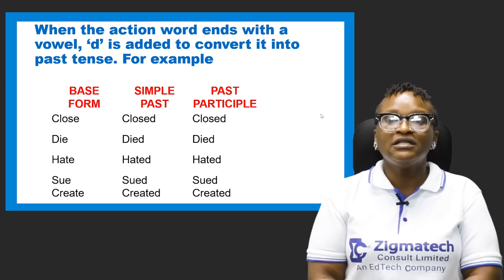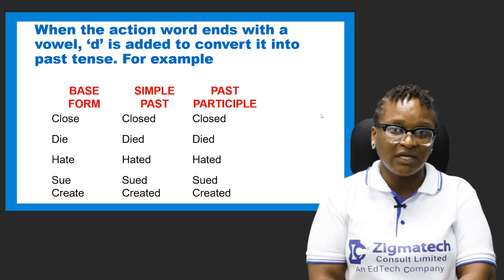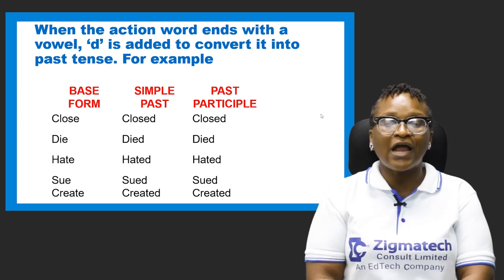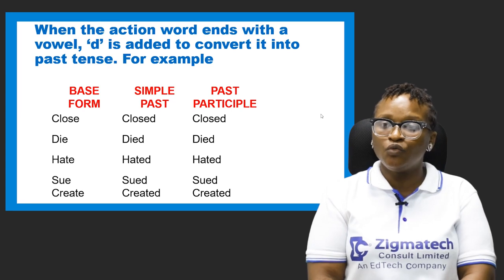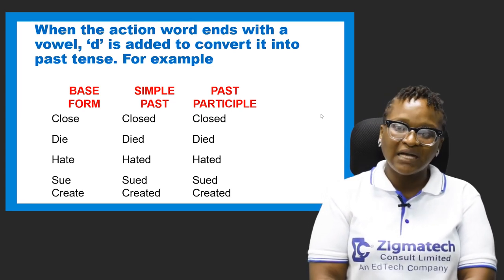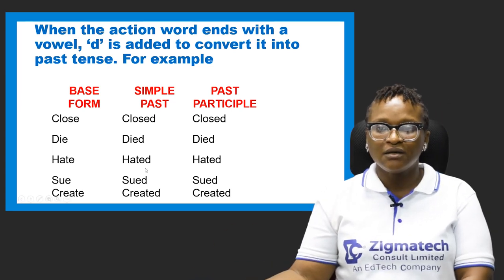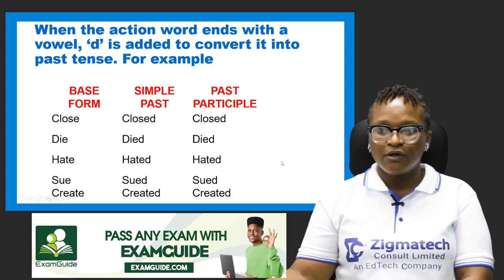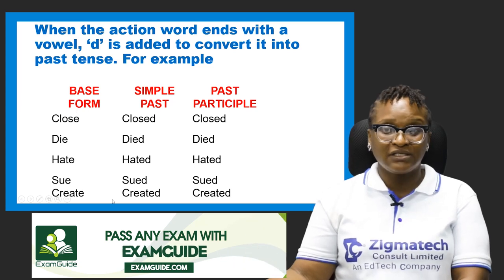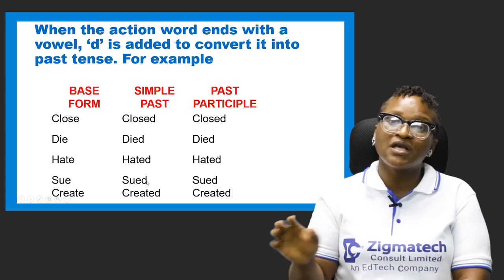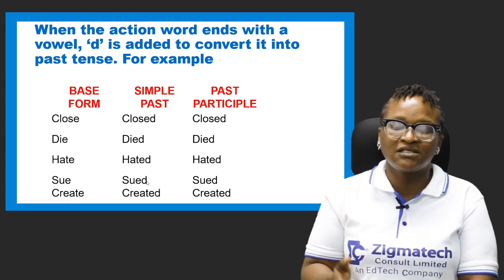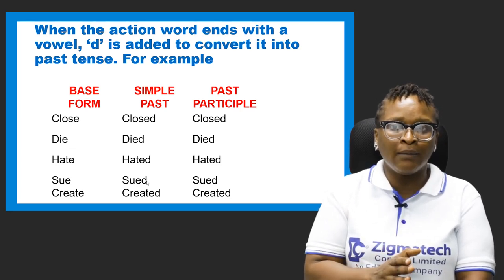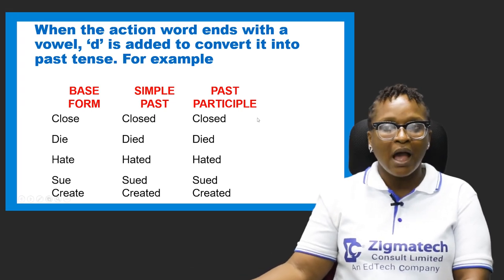I have these examples — base form, that's the present tense. Close, die, hate, seal, and create — these are all action words that end with E. So basically, we add D to form the simple past and the past participle. We have: closed, died, hated, sued, created — pronounced as 'hated' not 'hated,' and 'created.' Under the past participle, we have the same thing as the simple past. That is why regular verbs have a standard way of forming their past and past participle — it is standard, it is not mixed, it is not special.